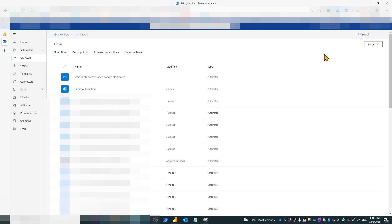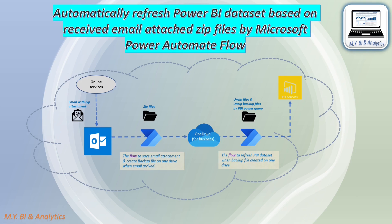You may test the flow with your own data as demonstrated in the previous video. So far, I have completed all introductions on the steps to: create a flow to save email attachments to OneDrive; use Power Query in Power BI to import and unzip files from OneDrive; and create a flow to refresh the Power BI dataset when a new file is created on OneDrive. If you missed my previous two videos, please check them on my YouTube channel.